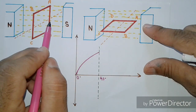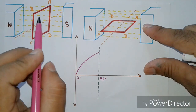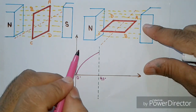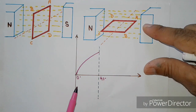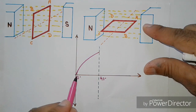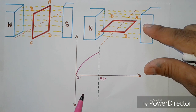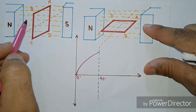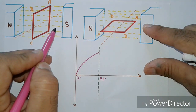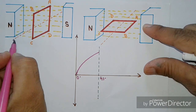Since the coil and flux are in a parallel position, no flux is being cut, and therefore no current and no EMF is induced. We can say that the waveform generated in this position is at zero.